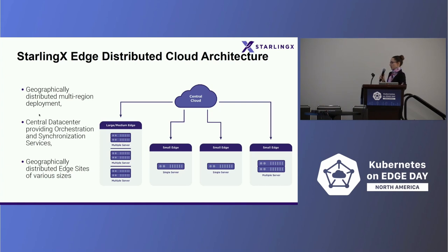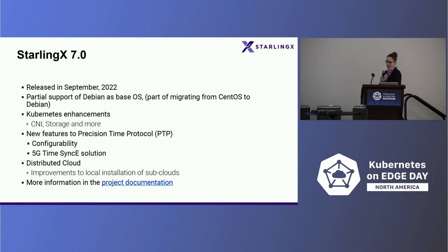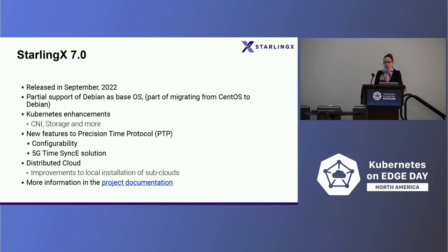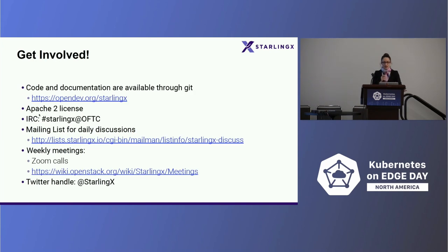For the single server deployment, it is — to use the fancy buzzword — hyperconverged, so you have all compute, storage, and networking functionality on that one, sometimes tiny, server. The latest release is 7.0. Some of the new features I'd like to highlight include the precision time protocol, which is usable both in the 5G use case and in industrial IoT, where real-time mission-critical applications are highly dependent on PTP and also time-sensitive networking. It's an open source project, so if anyone is interested, there are links on the slide for where information and the community are available.